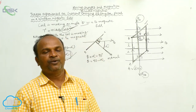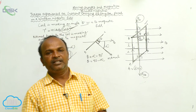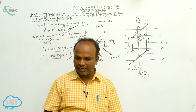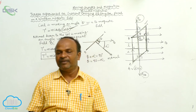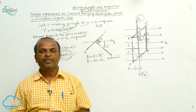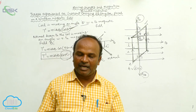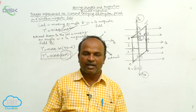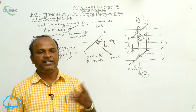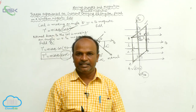Torque is equal to force into perpendicular distance. Therefore, tau is equal to BIAN cos theta if the coil itself is making an angle theta with respect to the magnetic field. If the normal drawn to the coil is making an angle alpha with respect to the magnetic field, then tau is equal to BIAN sin alpha.